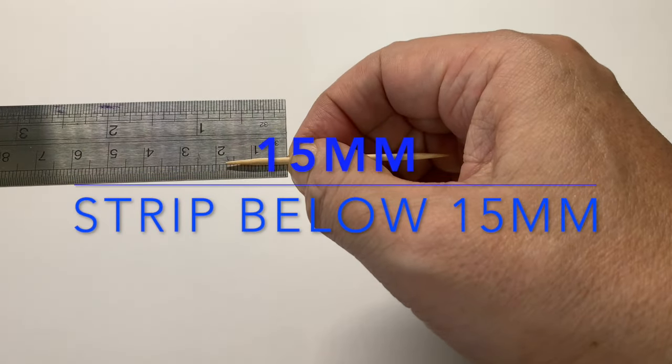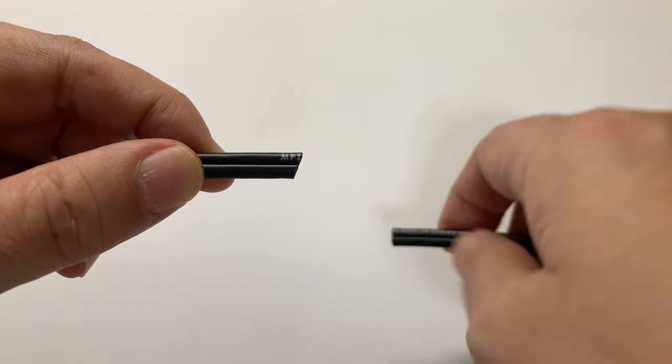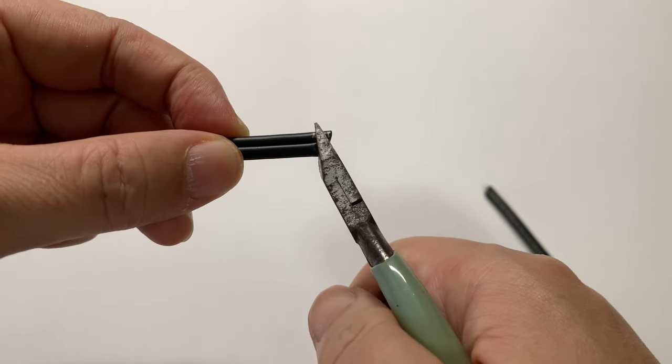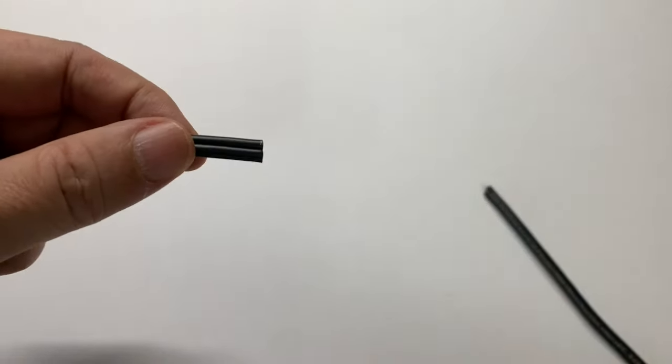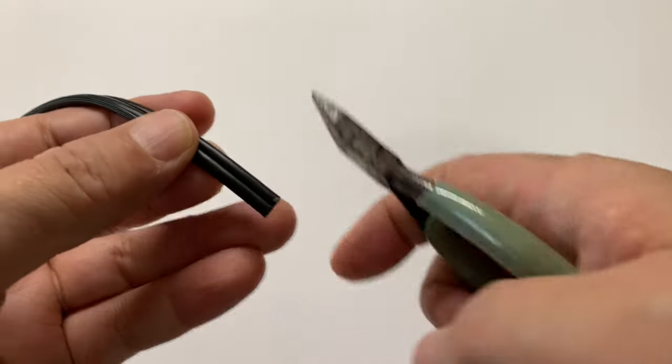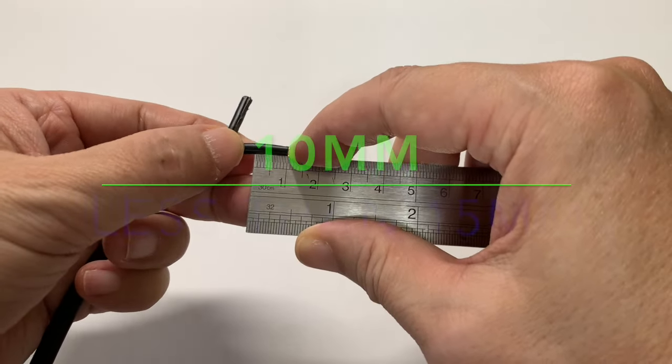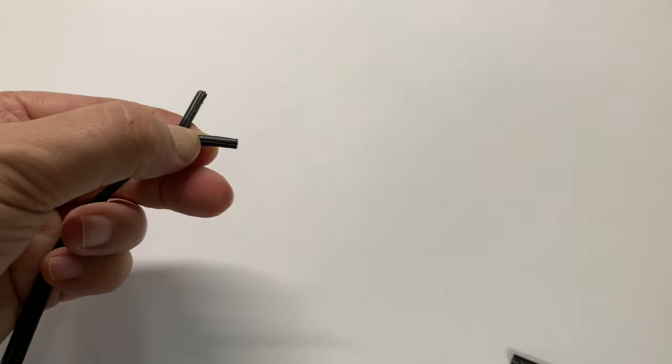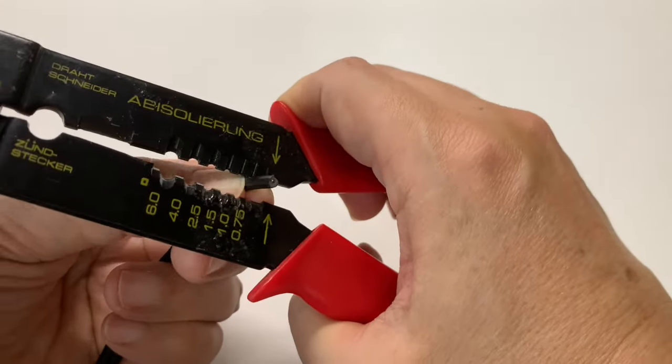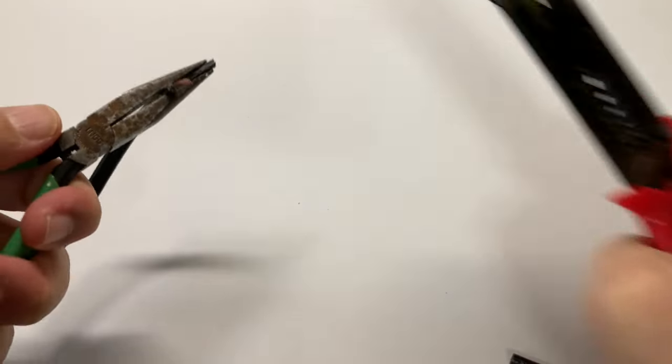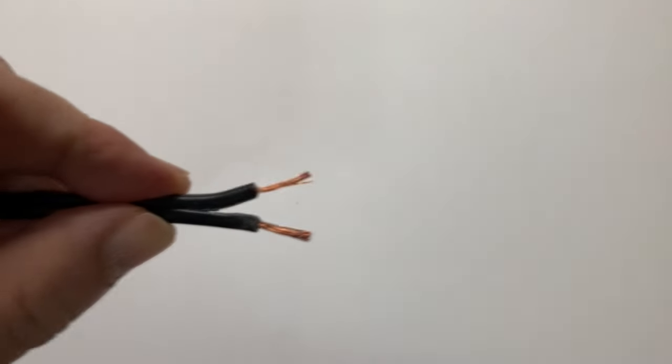Let's measure the depth to determine how long we should strip the wires to be spliced. The depth is around 15 millimeters, so the rule of thumb is to strip less than that. Make sure the tip of the pair of wires are cut flush to each other. I'll strip the wire to around 10 millimeters.